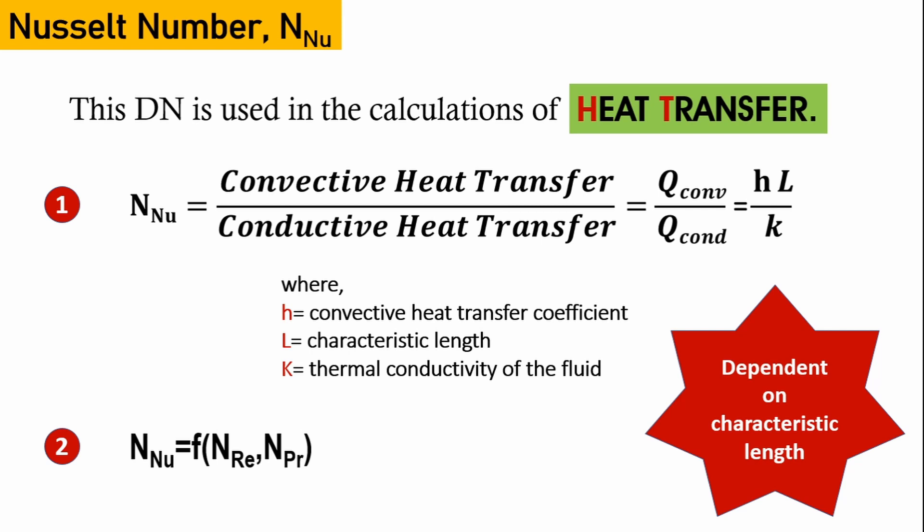If you compare the Nusselt number with the Prandtl number, one basic difference is that the Prandtl number is not dependent on the surrounding, whereas the Nusselt number is dependent on the surrounding.